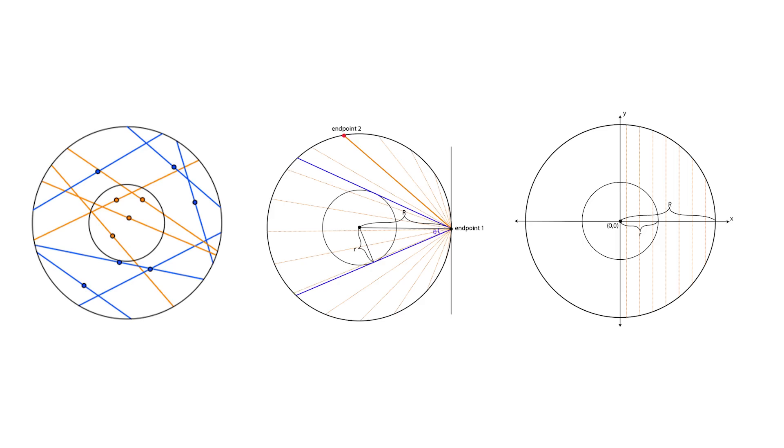These different methods of picking chords each give a different answer to the same question. This shows that the definition of randomness affects the probability result, highlighting the importance of clearly defining how randomness is generated in probability problems.